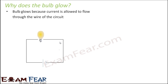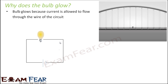The bulb glows because current is allowed to flow through the wire of the circuit. Let us try to understand this with the same example of the bridge. You have a bridge connecting towns A and B — A is on one side and B is on the other side of the bridge.